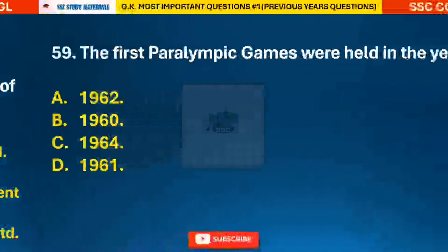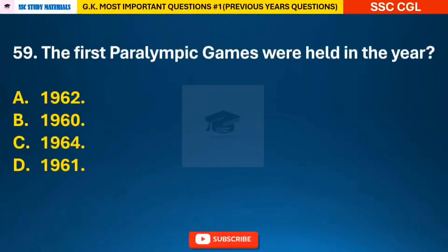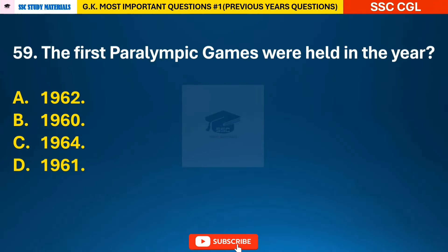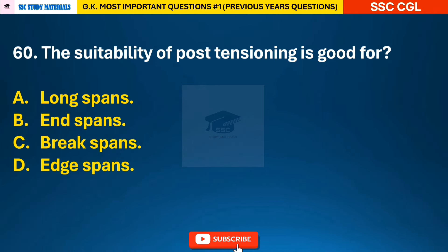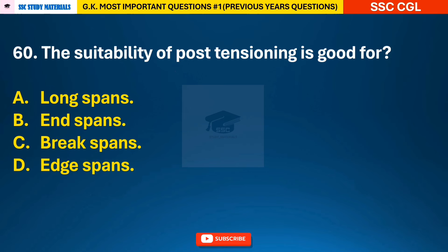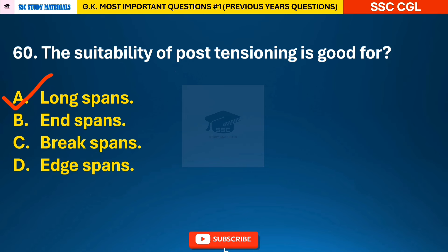Question 59: The first Paralympic Games were held in the year — answer B: 1960. Question 60: The suitability of post-tensioning is good for — answer A: long spans.